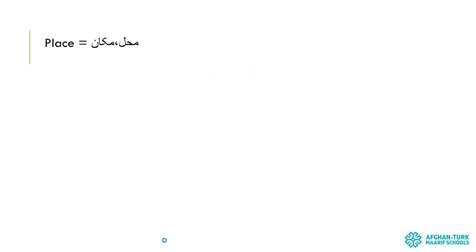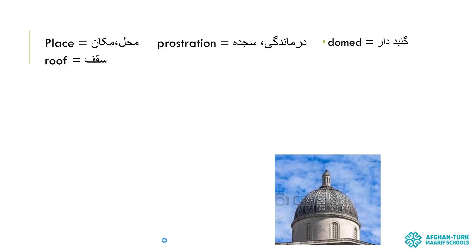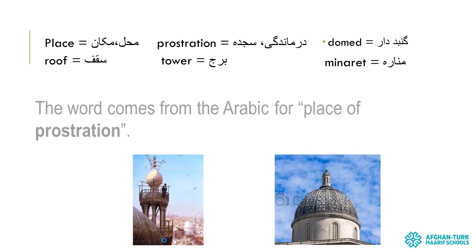Vocabulary: place — محل یا مکان, prostration — سجده, domed — گنبدار, roof — سقف, tower — برج, minaret — مناره.